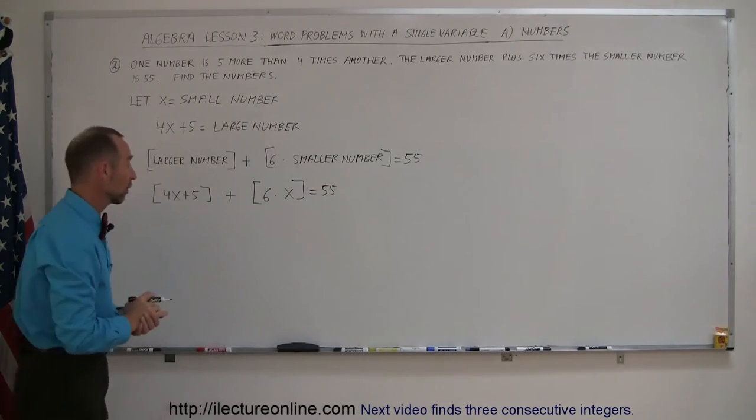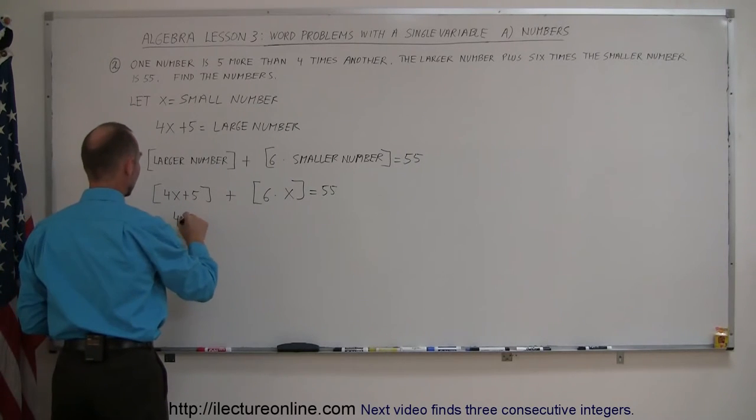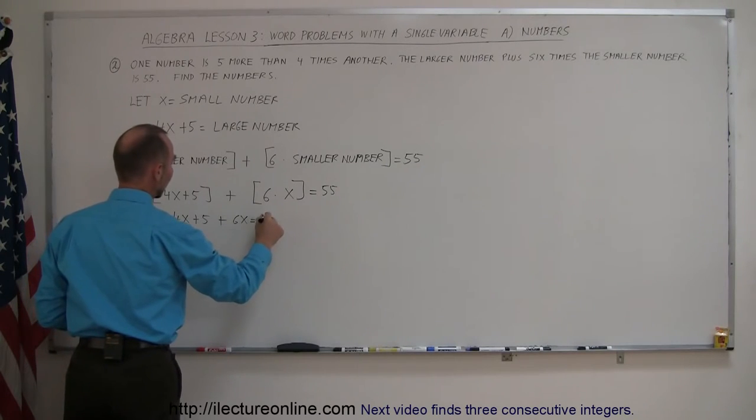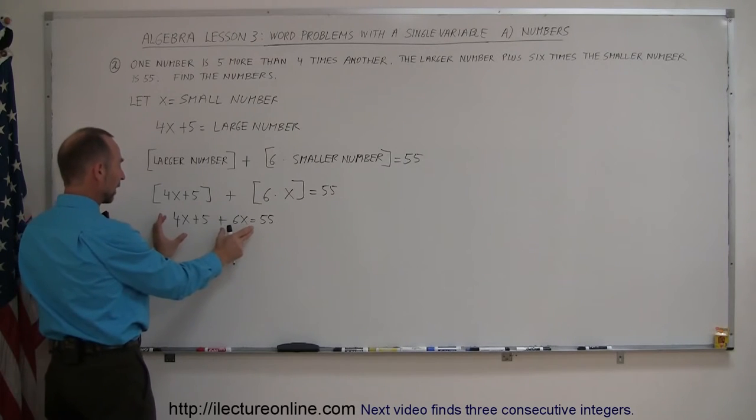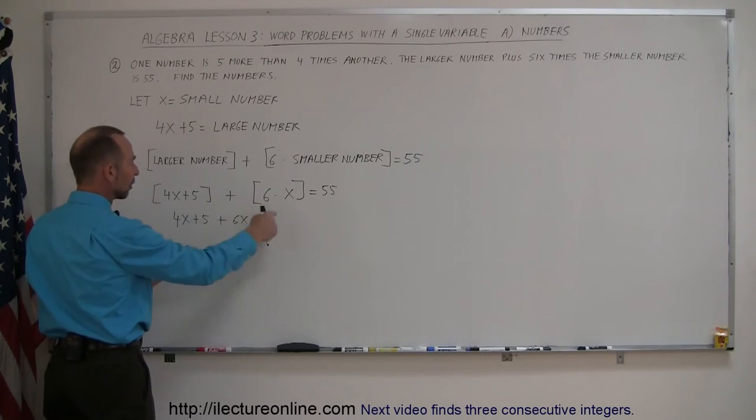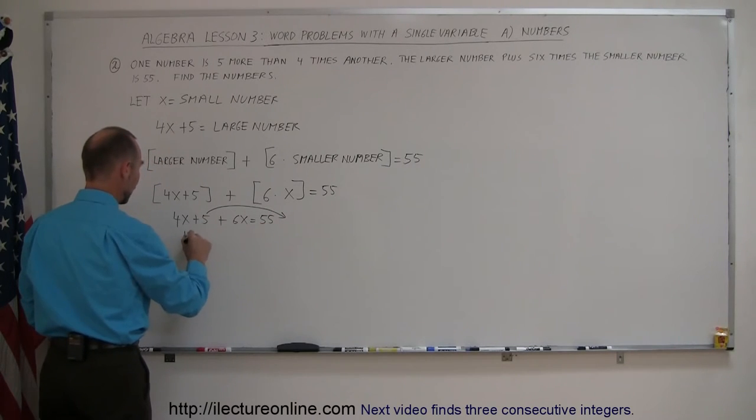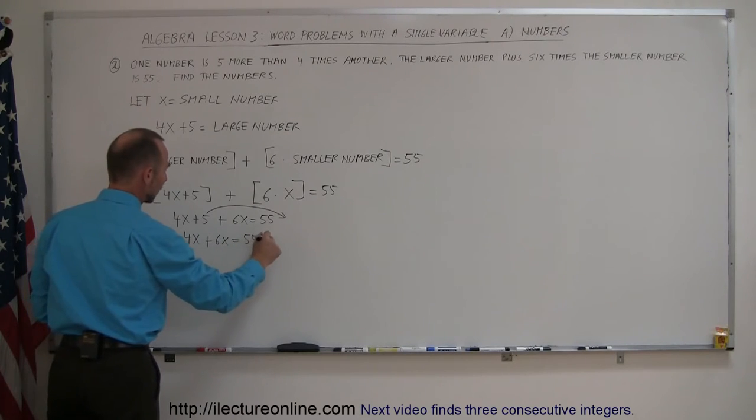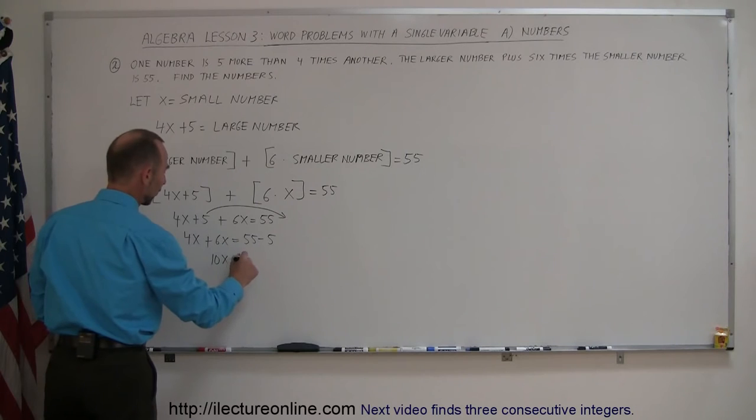Now we can solve this equation for x. Let's get rid of the brackets, we don't need them. So we have 4x + 5 + 6x = 55. Now we keep all the x terms on one side, move everything else to the other side. The plus 5 becomes negative 5. So 4x + 6x = 55 - 5.